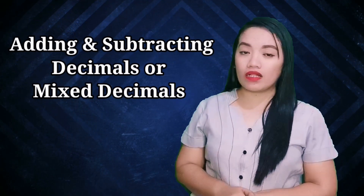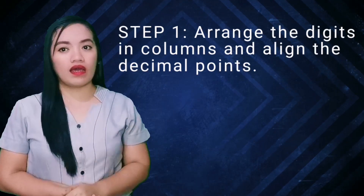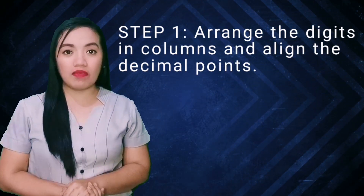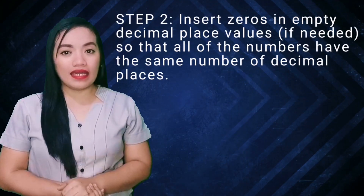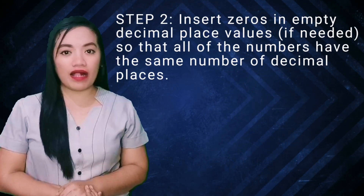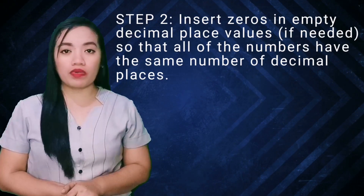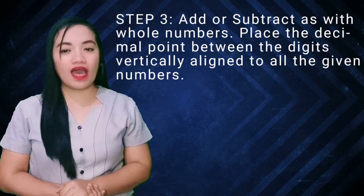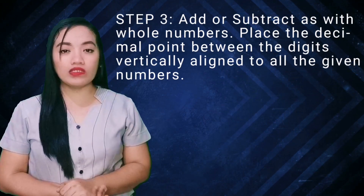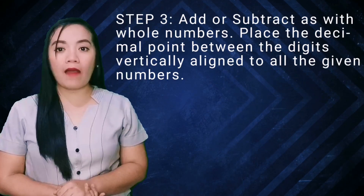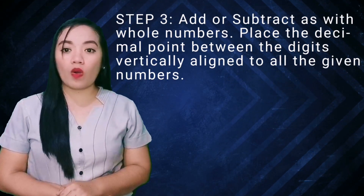Now let us move on to adding and subtracting decimals or mixed decimals. We follow these steps: Step one, arrange the digits in columns and align the decimal points. Step two, insert zeros in empty decimal place values if needed so that all numbers have the same number of decimal places. Step three, add or subtract as with whole numbers, then place the decimal point vertically aligned with all the given numbers.